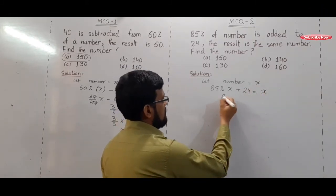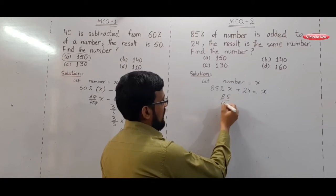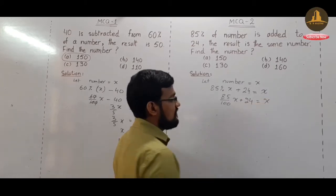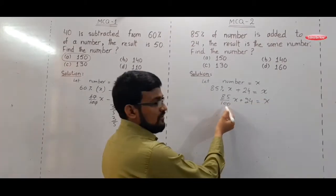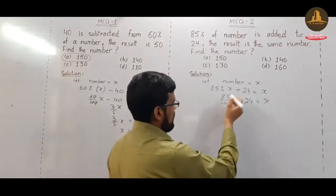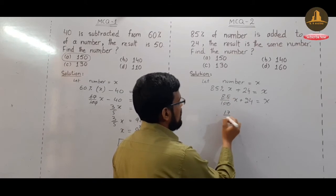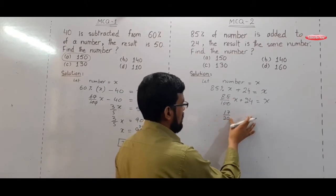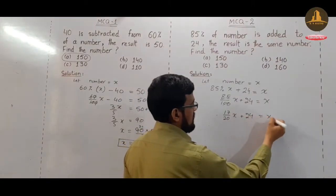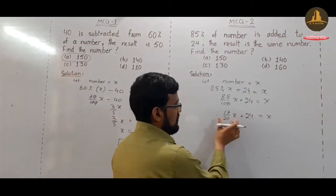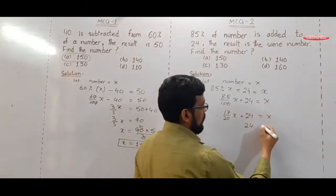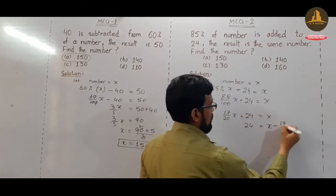85% means 85 divided by 100 X plus 24 equals X. So simplify it. Cancellation, separate the variable. The result here is 17 over 20 X plus 24. Value of X moves from left to right, it becomes negative.